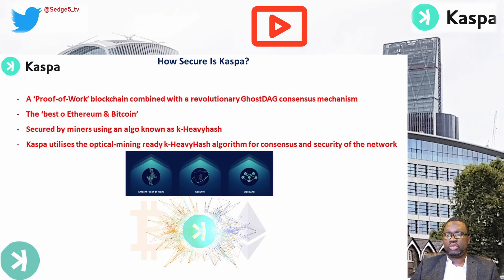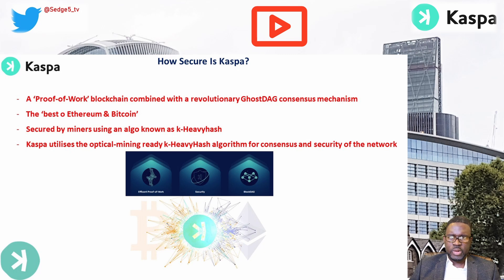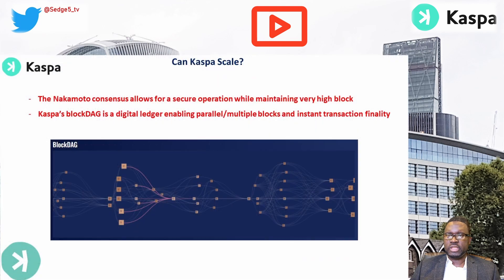As for security: as a proof-of-work blockchain combined with a revolutionary GhostDAG consensus mechanism, Casper is secured by miners using an algorithm known as K-Heavy Hash. For more details on that, please follow the link in the description. Every hash algorithm for consensus and security of the network is utilized by Casper through optical mining.